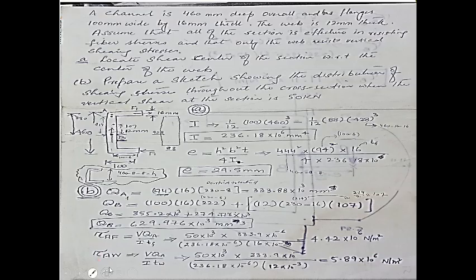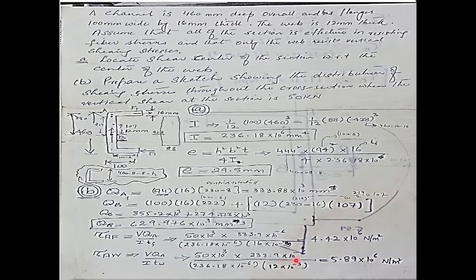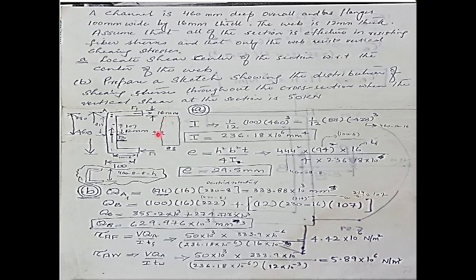The shear stress at point A with respect to the web is τ = VQa / (I · tw). Point A is shared between the flange and the web, but here we use the web thickness tw = 12mm instead of the flange thickness. This gives a different value of shear stress at A referenced to the web.